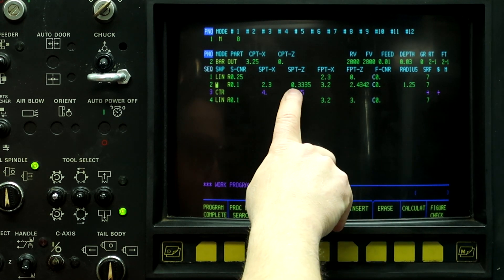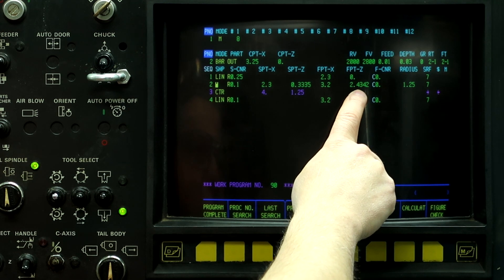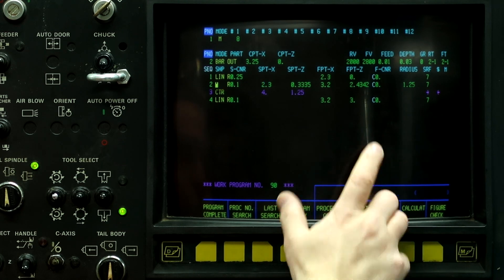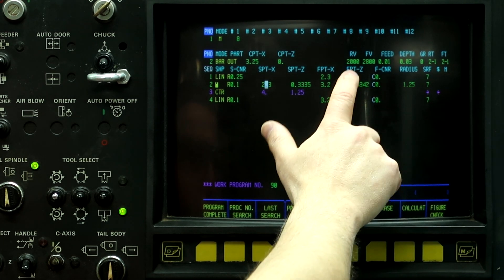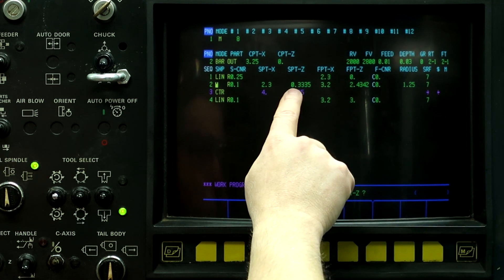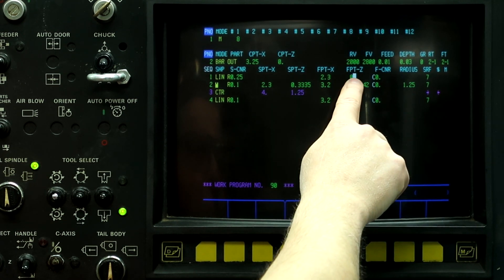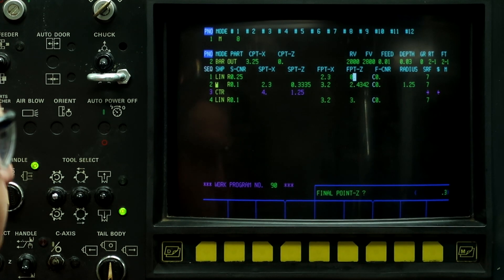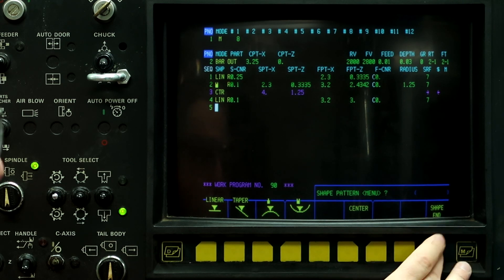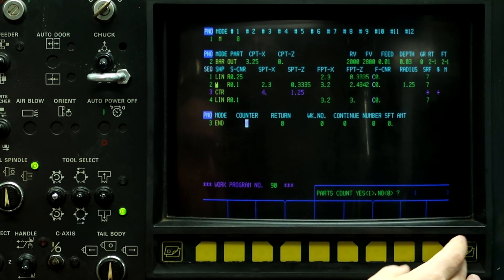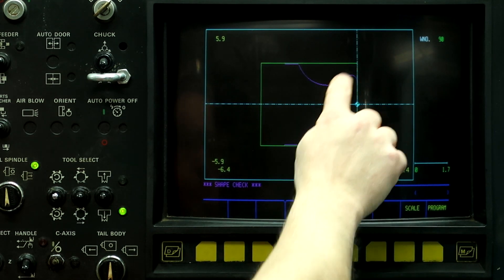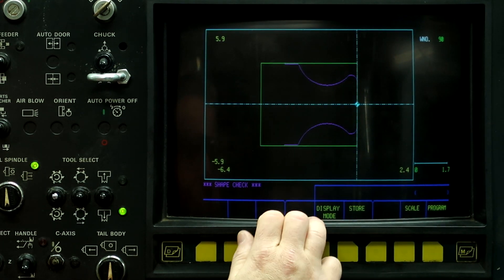And it calculated these two starting and ending positions. But if we push figure check, we're going to get an error because we didn't put anything in Z. So we need to go back up to it and put this position in for Z. So point 335 input, shape in, and end. So right button, figure check, and then there's our part.